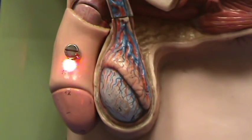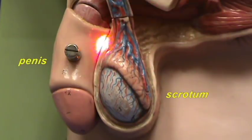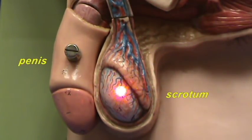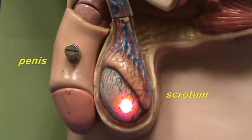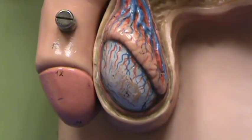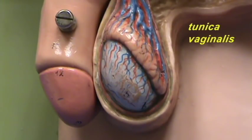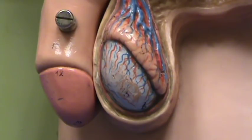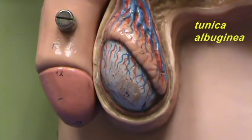The external genitalia consists of the penis and the scrotum. Within the scrotum you have the male sex organs, the testes. The serous membrane that lines the testes is referred to as the tunica vaginalis. The testes itself is surrounded by a fibrous capsule, and because of the thick nature of this fibrous capsule it appears white. For that reason it is referred to as the tunica albuginea.